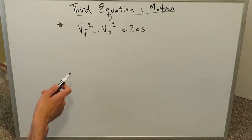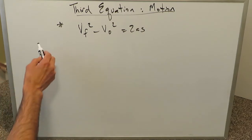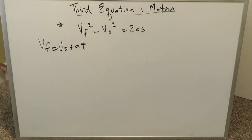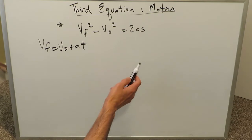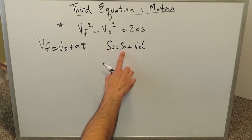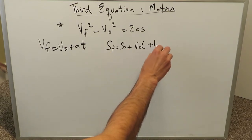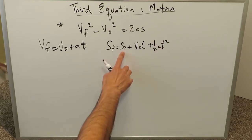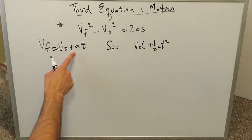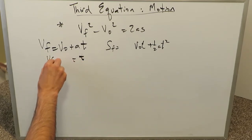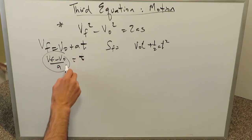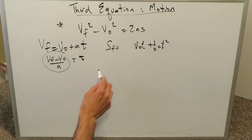To derive this, think back to the previous two equations of motion. One was: final velocity equals initial velocity plus at. The other, derived using an integral procedure, was: final position equals initial position plus initial velocity times time plus half at squared. If the initial position is zero, and in the first equation you solve for t, you get t equals vf minus vo over a. You substitute that expression for t into the second equation.